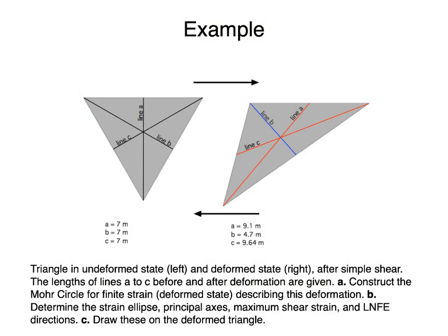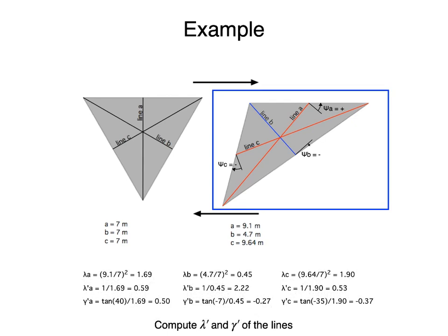Now let's look at an example that is similar to the card deck experiment you did in the lab. The equilateral triangle to the left is the undeformed geometry, and the triangle to the right is the geometry after simple shear. The bisectors A, B, and C are originally 7 meters in length, and their lengths after deformation are given. We need to construct the Mohr Circle for this deformation, determine the strain ellipse, maximum shear strain, and lines of no finite elongation, and draw these on the deformed triangle. Let's start by measuring the angular shear of the lines. Line A has positive angular shear of 40 degrees, since its perpendicular rotated anticlockwise. Line B has negative angular shear of 7 degrees, since its perpendicular rotated clockwise. And line C has negative angular shear of 35 degrees, since its perpendicular rotated clockwise.